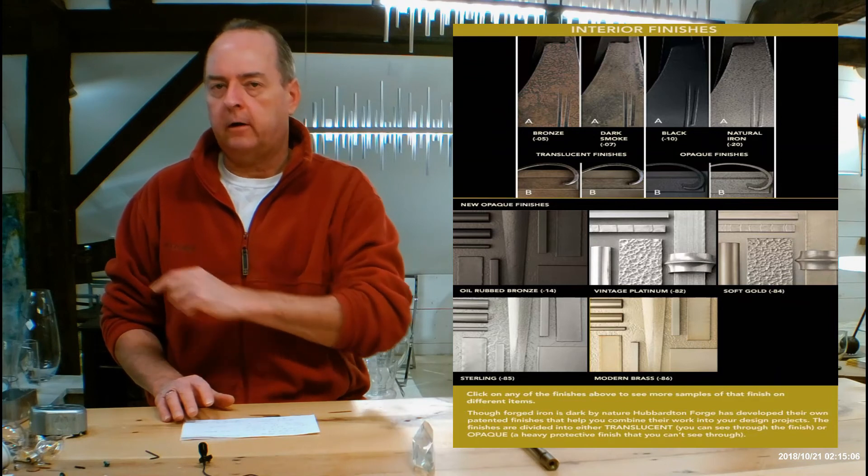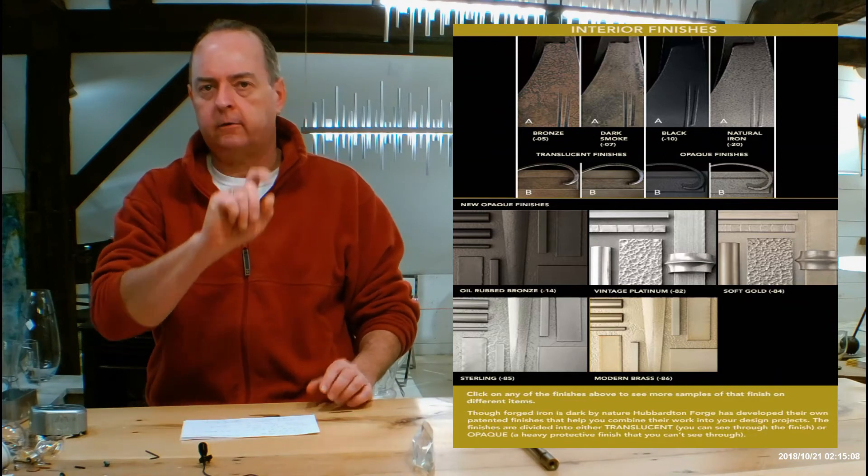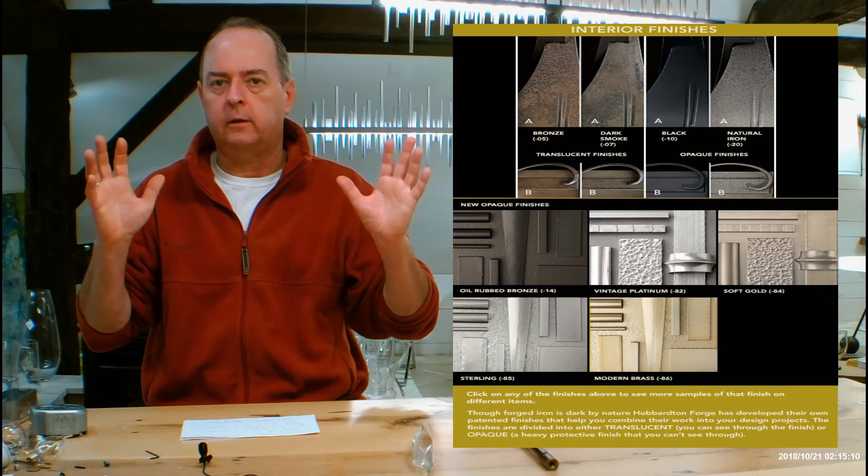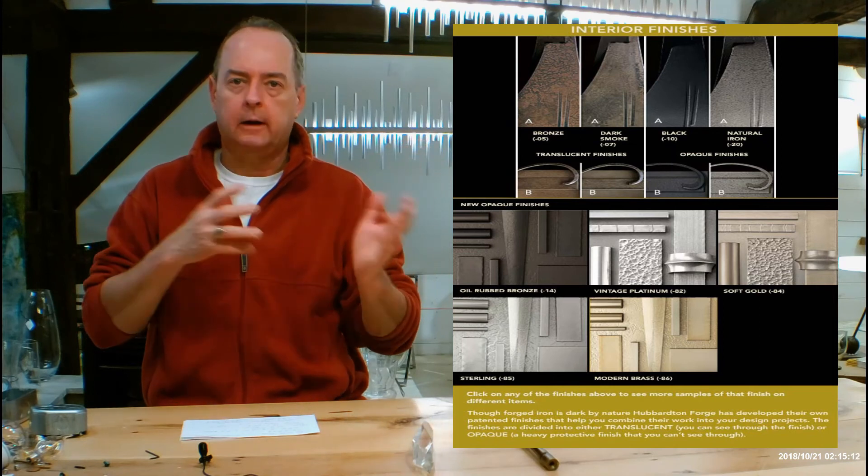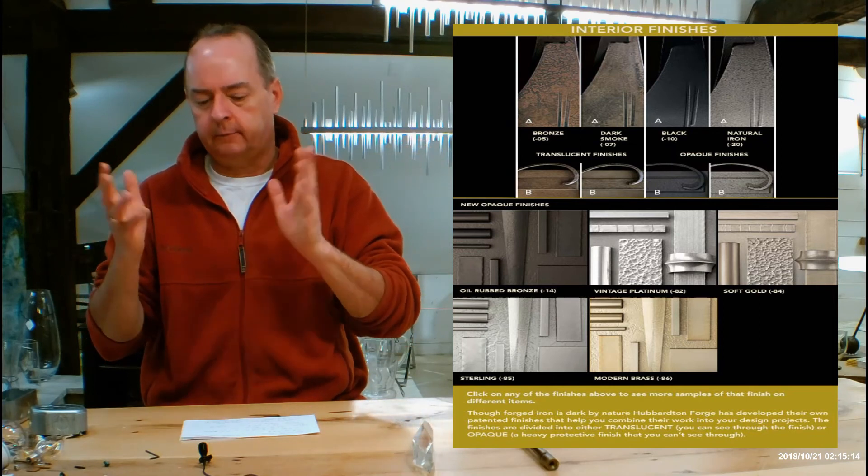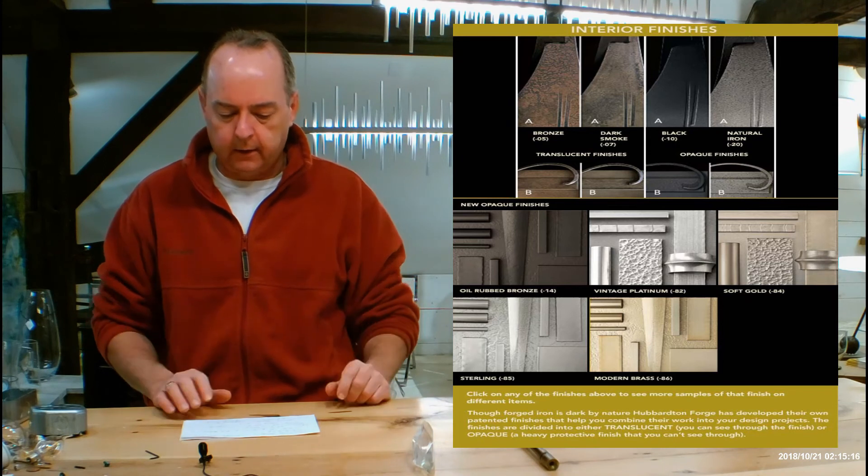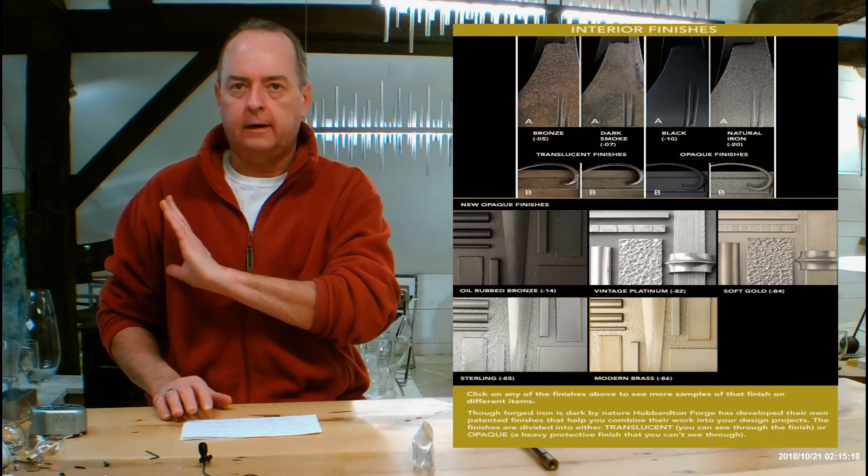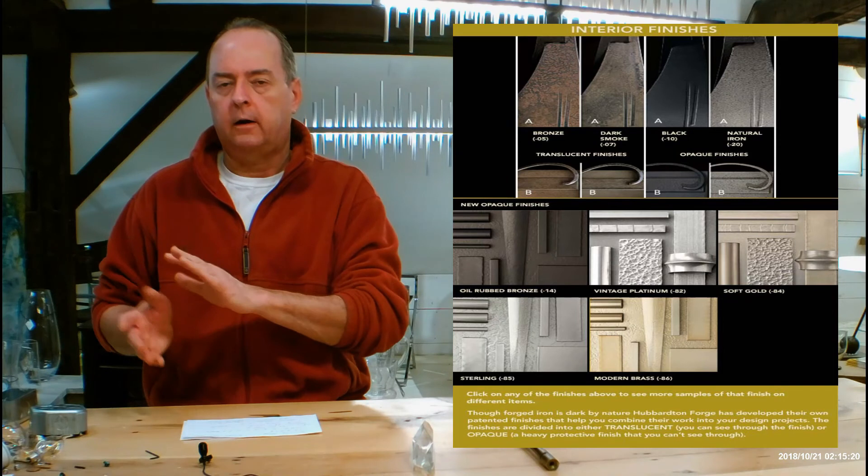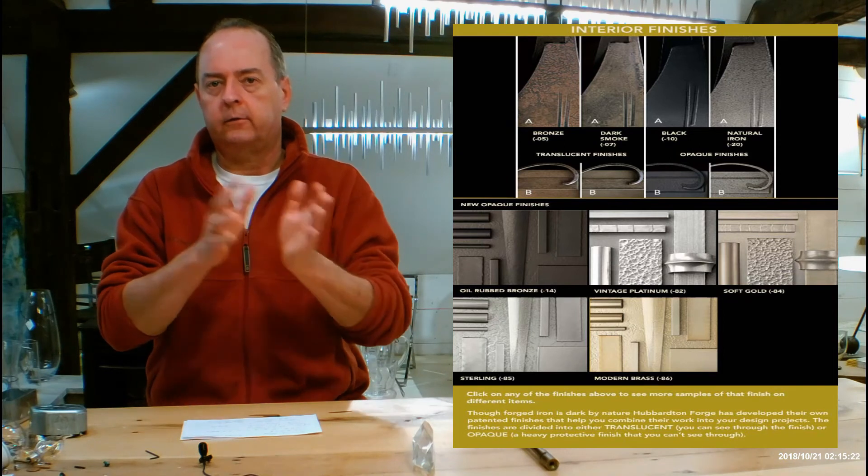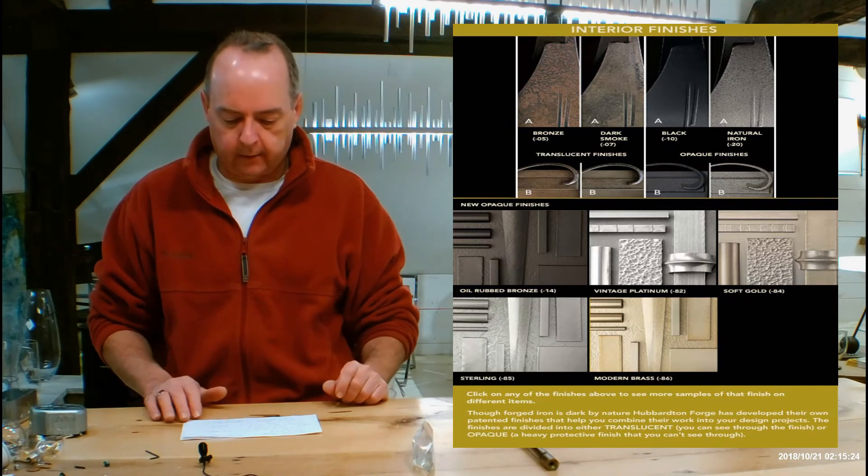You can click on that chart on different things. Click on dark smoke and a big page will pop up showing you lots of different things in dark smoke. Click on burnished steel or natural iron—it'll do the same thing. It's really important that you understand how Hubberton Forge's finishes are divided into translucent and opaque and how they can look on different fixtures.